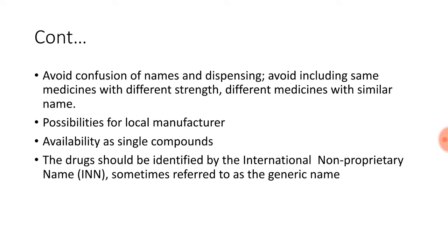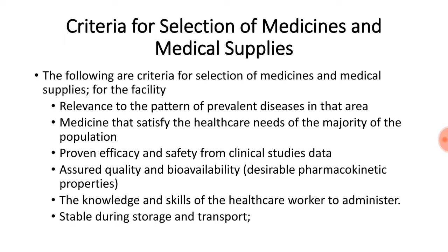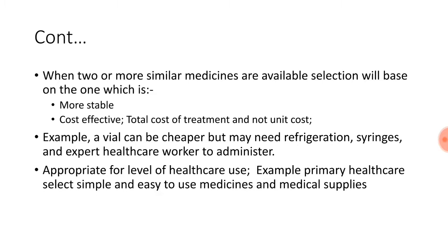In summary, the criteria for selection of medicines and medical supplies are: relevance to the pattern of prevalent disease; satisfying the majority of the community's needs; proven safety and efficacy; quality and availability; knowledge and skills of healthcare workers to administer; stability during storage and transport; and when two similar medicines are available, choose the more stable and cost-effective one. Also consider the appropriate level of healthcare use.